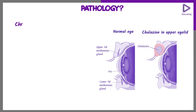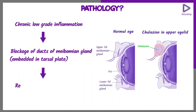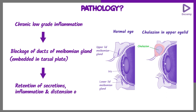The pathology: this is a chronic low-grade inflammation which causes blockage of the ducts of the meibomian gland. This meibomian gland is embedded in the tarsal plate. It will cause retention of the secretion, which will lead on to inflammation and then distension of the meibomian gland.